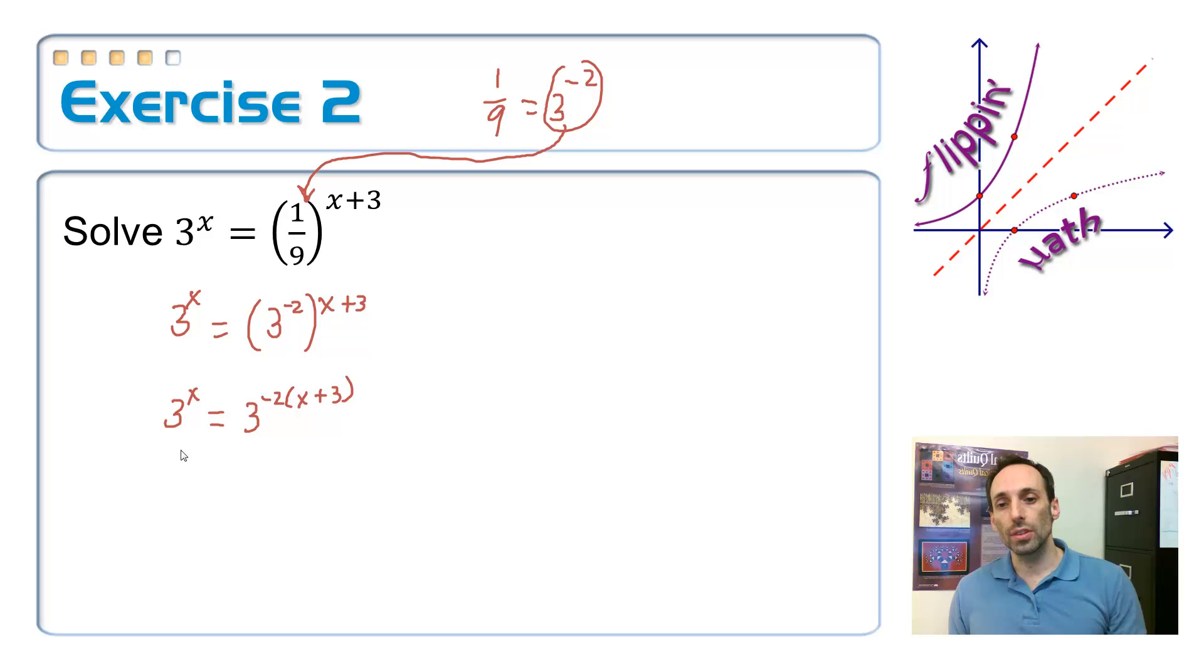Now, if the bases are the same, the exponents must be the same. So this simplifies to just simply x is equal to negative 2, and I'm going to go ahead and distribute here as I go, save myself some time, negative 2x minus 6.